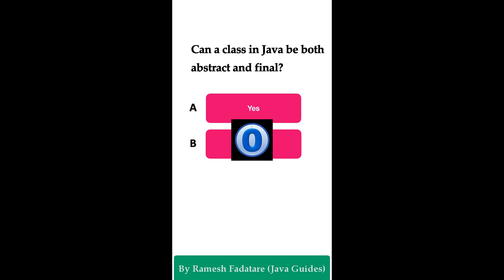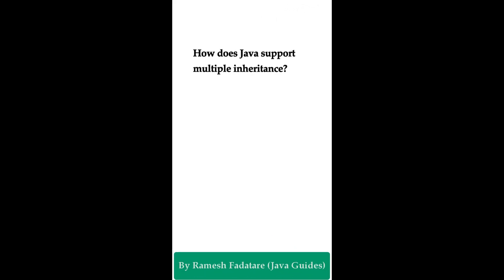The correct answer is option B: no. An abstract class with abstract methods must be inherited and its methods overridden to provide implementation. A final class, however, cannot be inherited. Therefore, you cannot use both the abstract and final keywords together on a class — a class in Java cannot be both abstract and final.